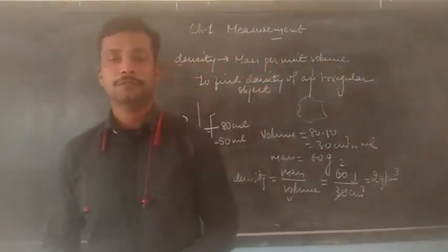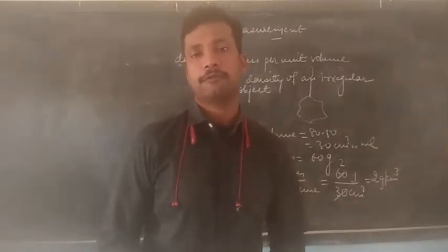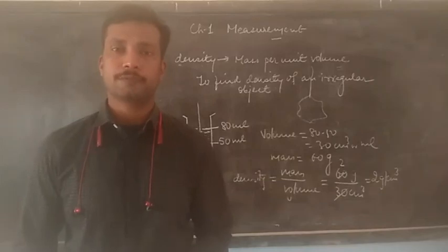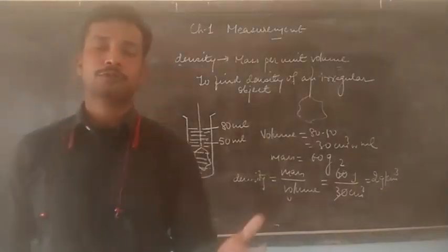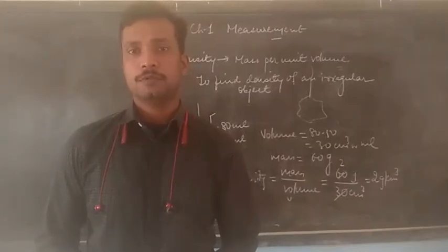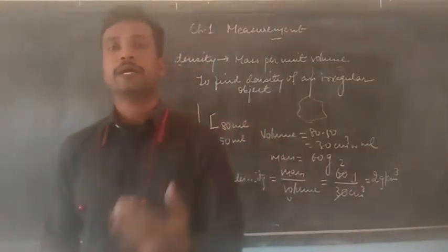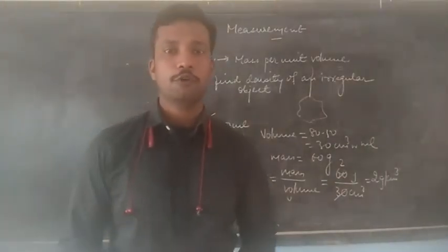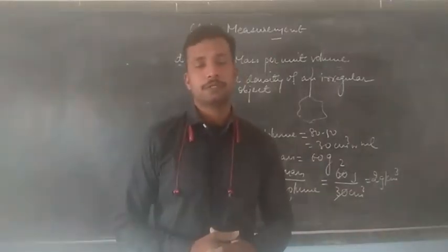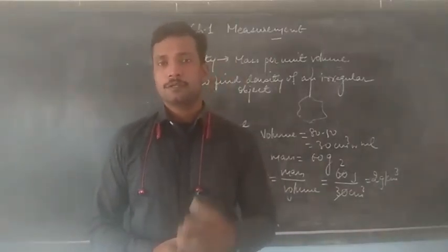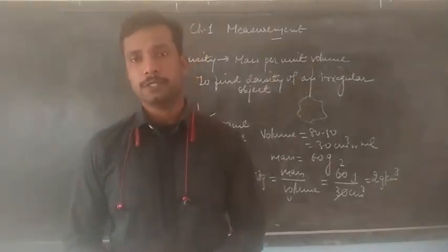So this is the method to find out the density of an irregular solid object. You may also try it at home by taking any irregular shaped object, dipping it into water, observing the change in volume, and then using the formula to calculate the density. Next class we will discuss about relative density. Thank you.